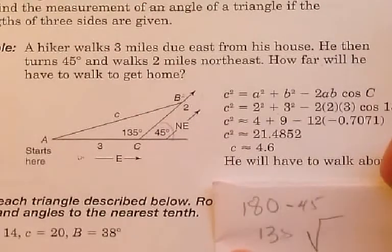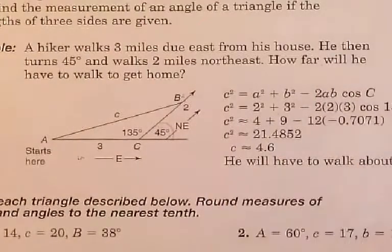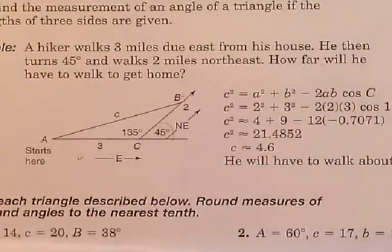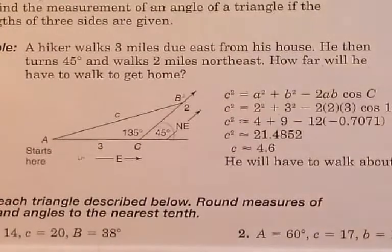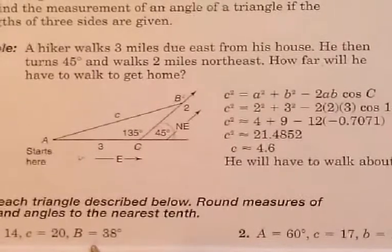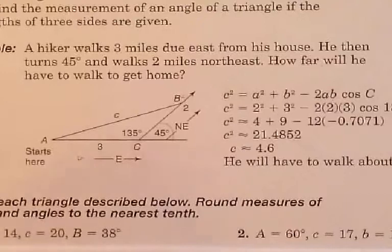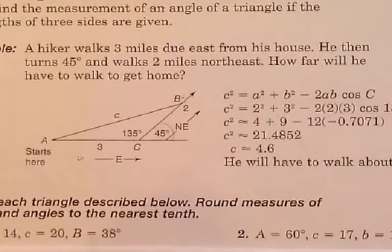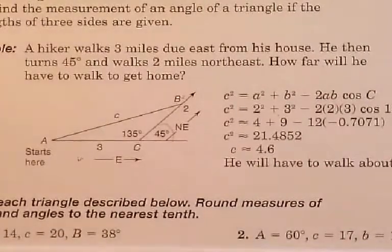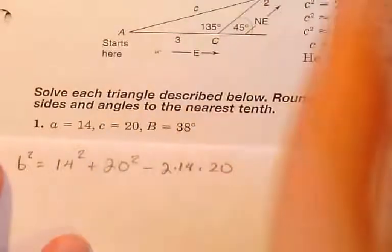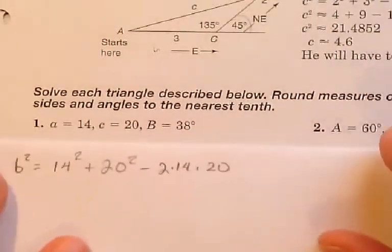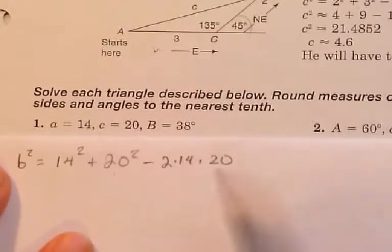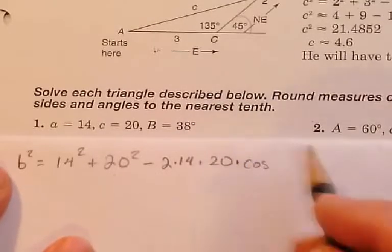Let's do it again. So if I have a triangle like this, they tell me angle B is given to me. I want to know what side B is then. Side B: I have to have 14 squared plus 20 squared minus two times 14 times 20 times the cosine of — there we go — so it's 38 degrees.